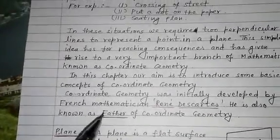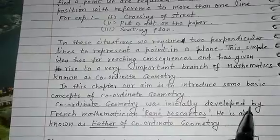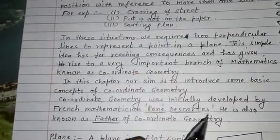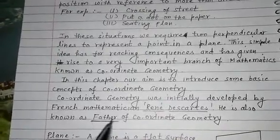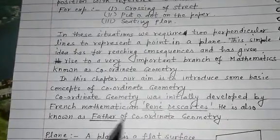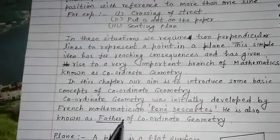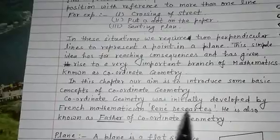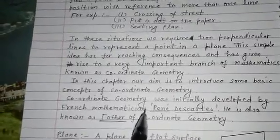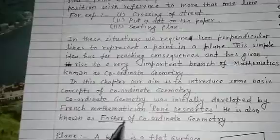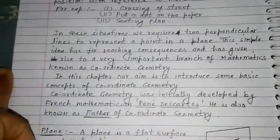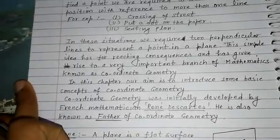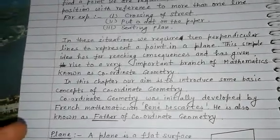One more important thing here — coordinate geometry was initially developed by French mathematician René Descartes. He is also known as the father of coordinate geometry. This is a question that is sometimes asked: who is known as the father of coordinate geometry? The answer is René Descartes. Remember this for examination purposes.